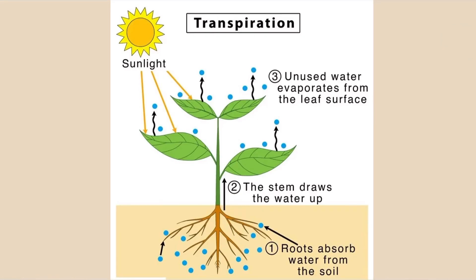This is the full process of transpiration. First, roots absorb water from the soil. Then the stem draws the water up. And then unused water evaporates from the leaf surface.